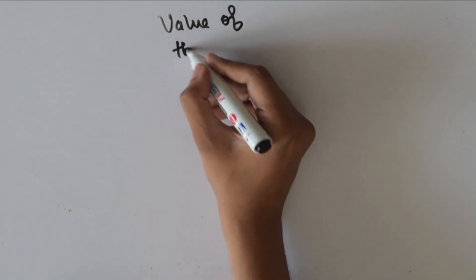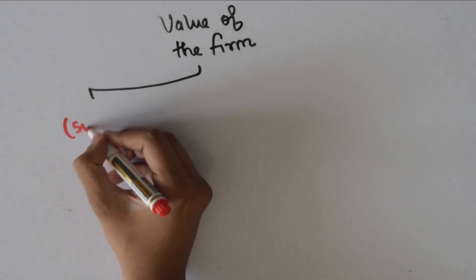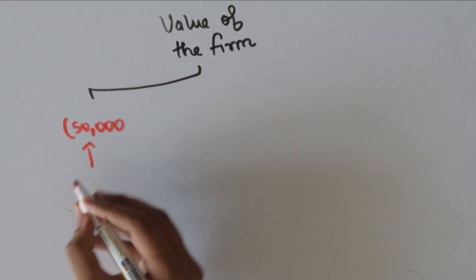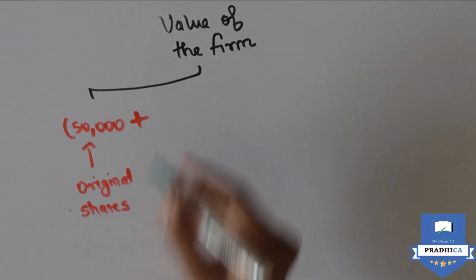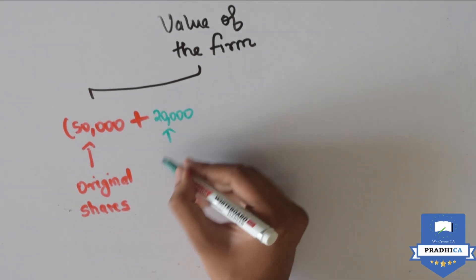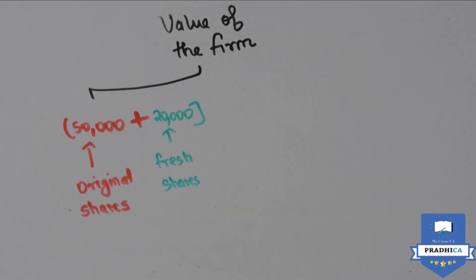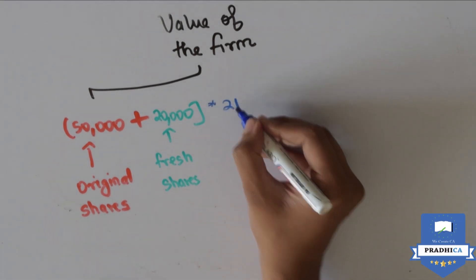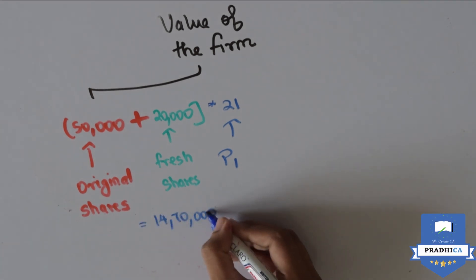Let us see how the value of the company has been affected in both cases. In the first case, 50,000 shares, which is the original equity, plus 20,000 shares, which is the fresh equity, comprise the float of the company. This multiplied by 21, which is the market price at the end of the year, gives us the value of the company.